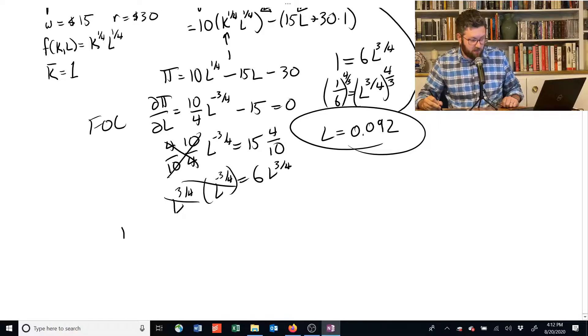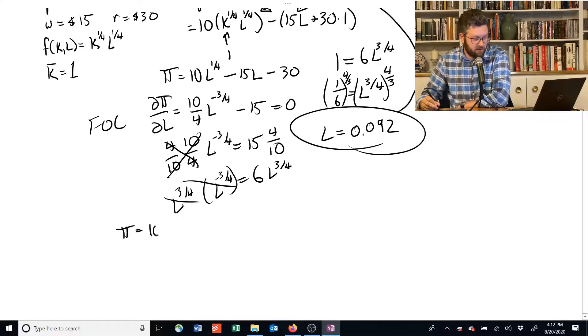So $10 times 1 to the 1/4 times 0.092 to the 1/4 minus 15 times 0.092 minus or plus 30 times 1.